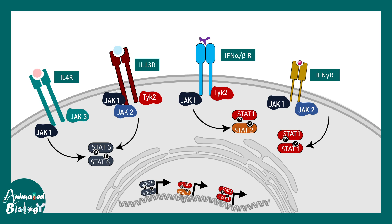For example, the IL-4 receptor binds to JAK-1 and JAK-3, whereas the interferon gamma receptor binds to JAK-1 and JAK-2, and they activate different STATs. IL-4 activates STAT-6, while the interferon gamma receptor activates STAT-1 homodimers. These heterogeneous outcomes lead to differences in cellular responses.